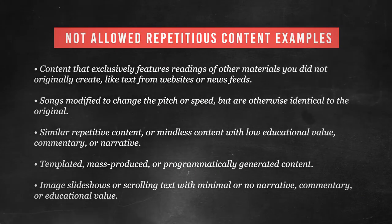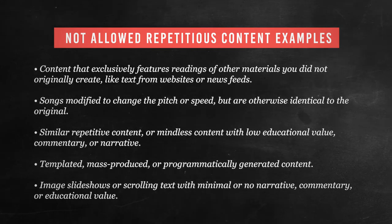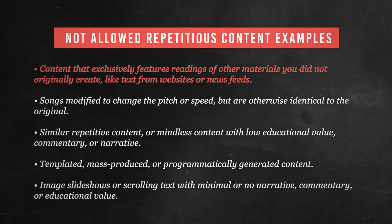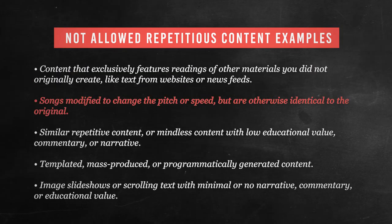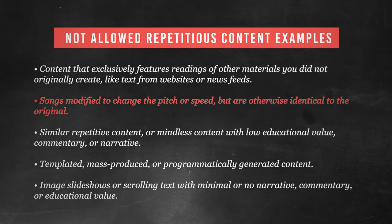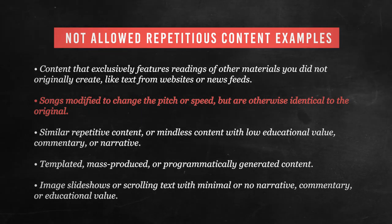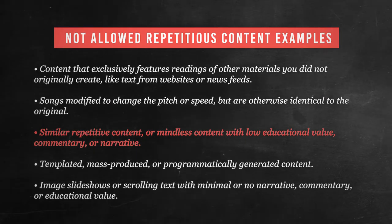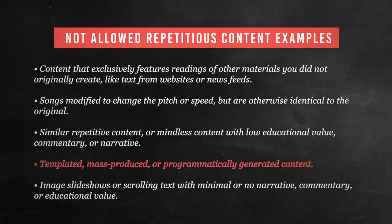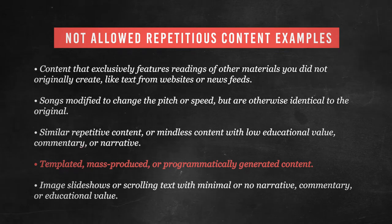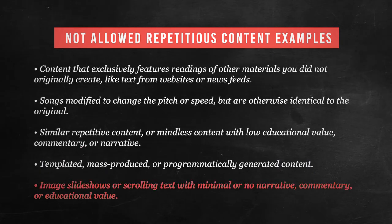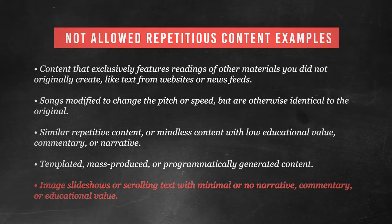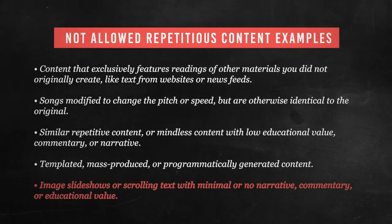Everybody wins — well, everyone except Spammy McSpammyface, but who cares about him, right? Here are some examples of what YouTube says is not okay as far as repetitious content goes. Number one: content that exclusively features reading of other materials you did not originally create, like text from websites or news feeds. Number two: songs modified to change the pitch or speed, but are otherwise identical to the original. Number three: similar repetitive content or mindless content with low educational value, commentary, or narrative. Number four: templated, mass-produced, or programmatically generated content. And number five: image slideshows or scrolling text with minimal narrative commentary or educational value.